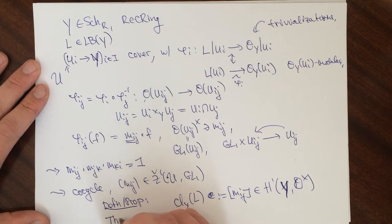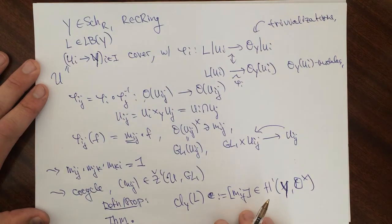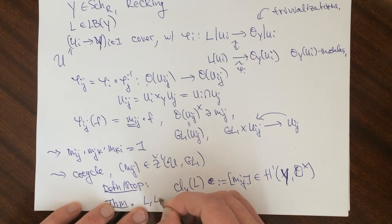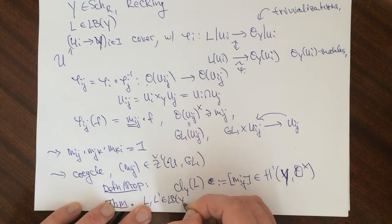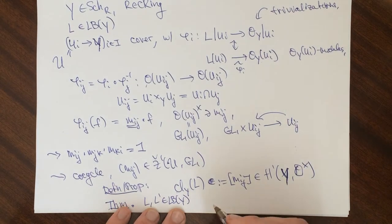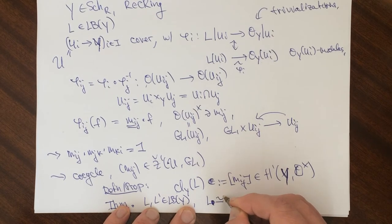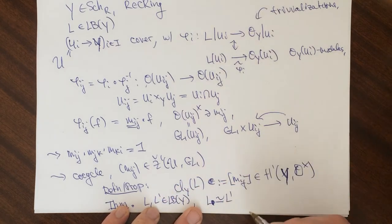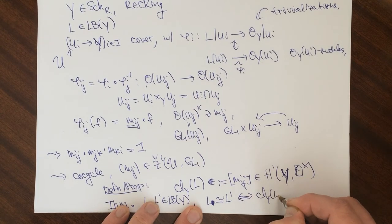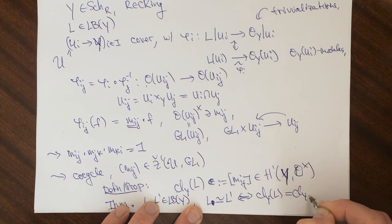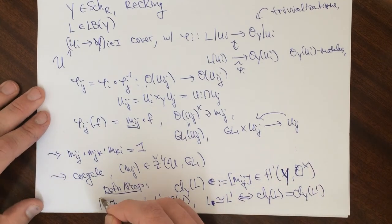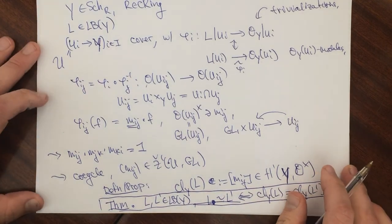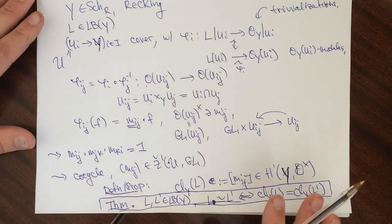The theorem is: if we have two line bundles L and L prime on Y, then L is isomorphic to L prime as O_Y-modules if and only if their cohomology classes are the same in H¹(Y, O*). So there's a classification of line bundles up to isomorphism given by this. There are probably videos on the internet that do this — it's treated really well in lots of places — so I'm just going to state this.